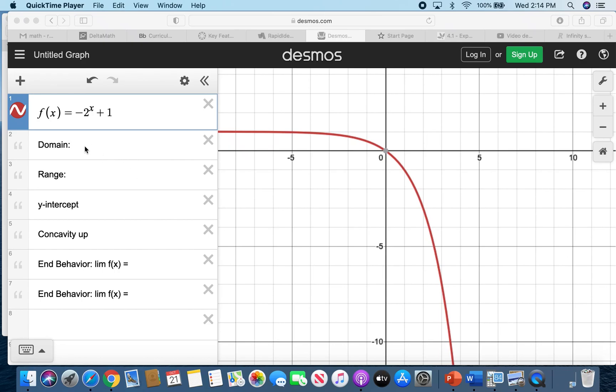A negative exponential function, how do you find all these properties of the graph?